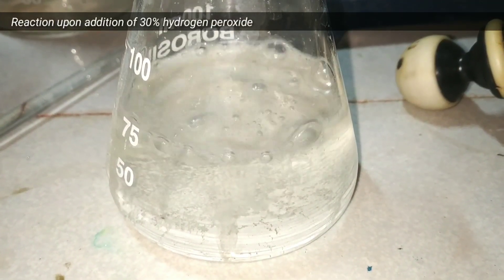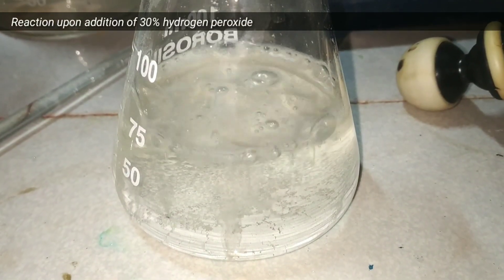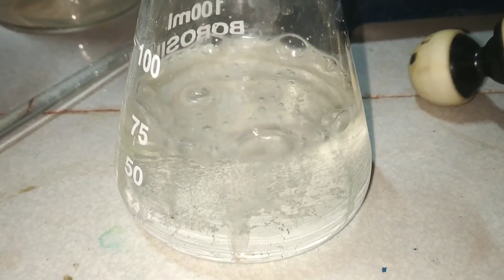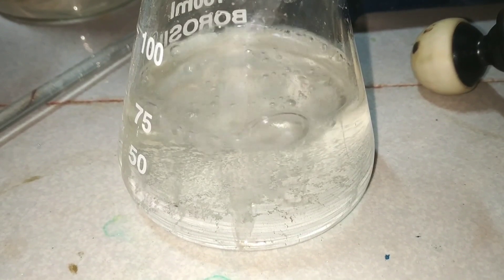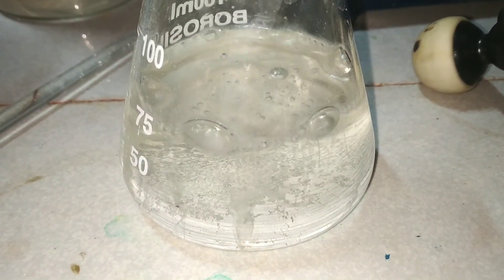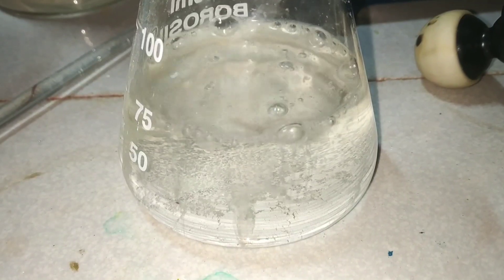So I decided to add some 30% hydrogen peroxide solution to make all the mercury 1+ to mercury 2+. And as you can see, all the mercury oxides have now dissolved in the solution and the solution has now turned clear.